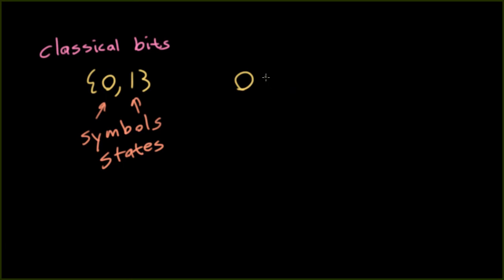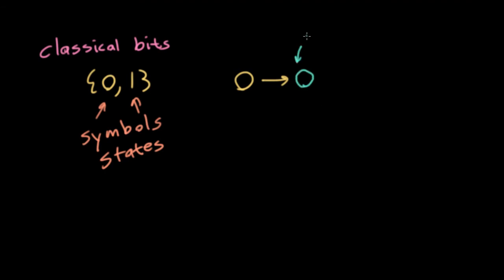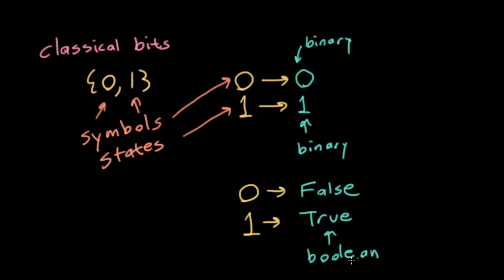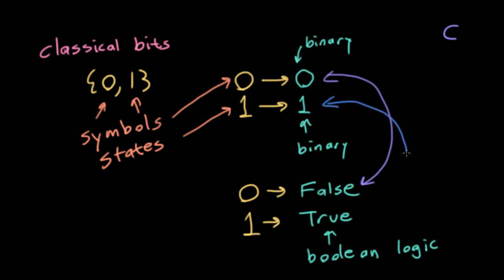Quite often we will think about the symbol zero mapping to the concept of the number zero in a binary numbering system, and sometimes we might think of our symbol one as mapping to the binary number one in a binary number system. But again, these are just generic markers representing one of two possible states — you might as well call them frowny face and smiley face. We'll often use these symbols to represent a concept of false and true if we think about propositional logic, so this is Boolean logic. In a programming language like C, we'll often equate the number zero with the concept of false in something like an if-then statement, and similarly equate the number one with the concept of true.